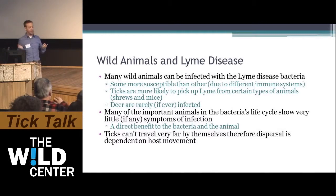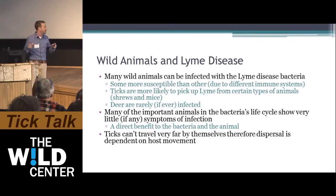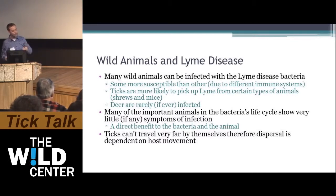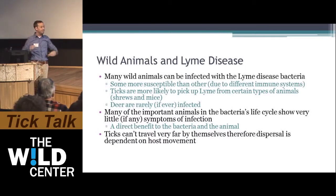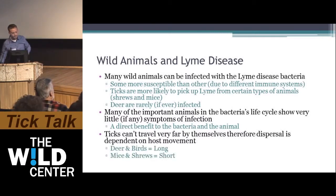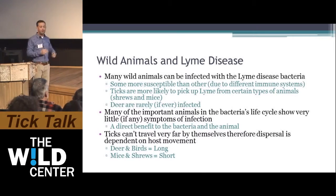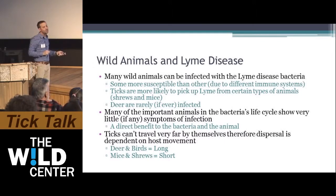Ticks can't travel very far on their own — they only take one blood meal per life stage and have a limited energy store. So dispersal of ticks has to come from the animal. Deer and birds travel large distances and can disperse ticks everywhere, but mice and shrews aren't traveling from here to Montreal or Albany. So larger, more mobile animals are key drivers of tick spread.